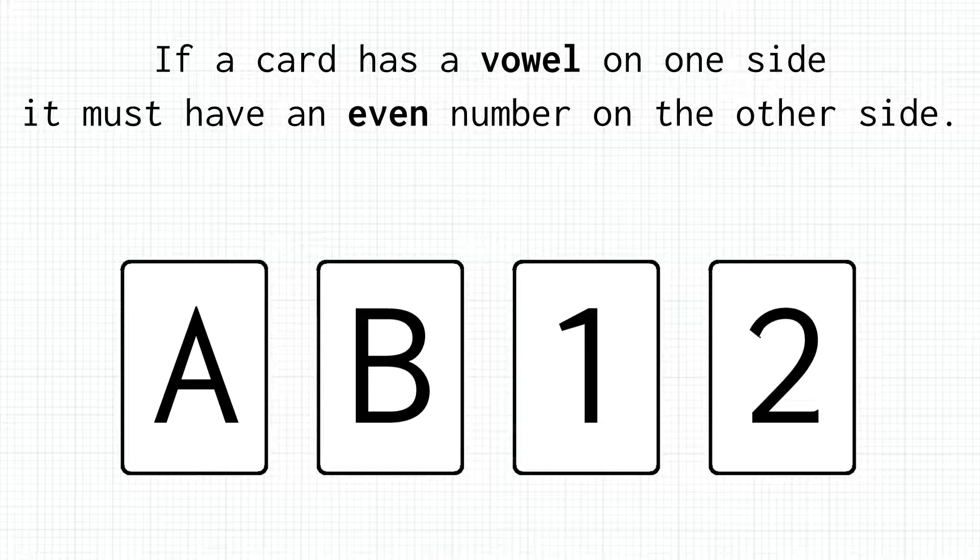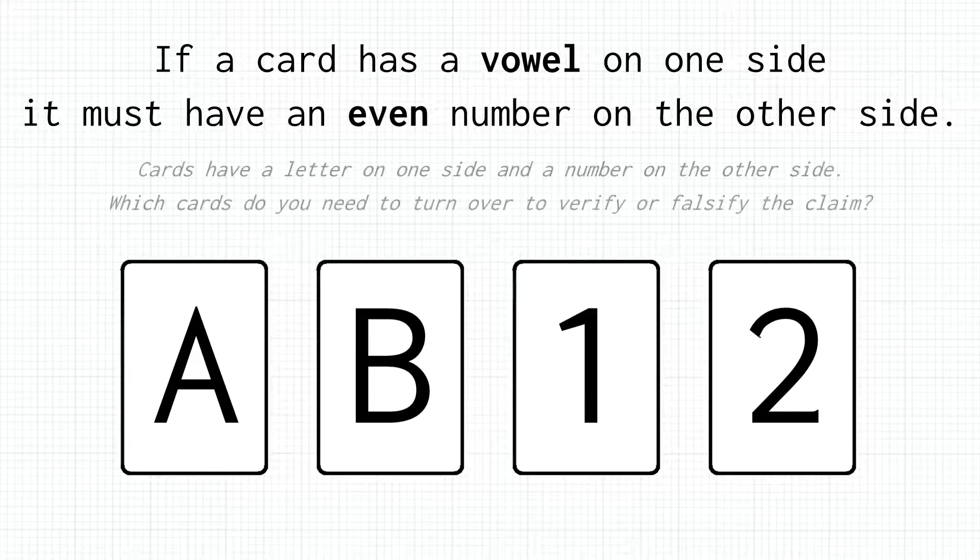If a card has a vowel on one side, it must have an even number on the other side. Your task is to either falsify or verify this claim by turning over as few cards as possible. How many cards do you need to turn over, and which?